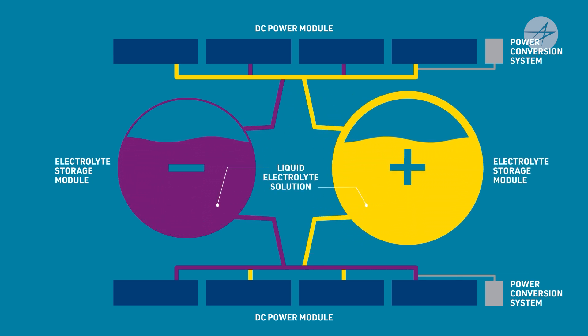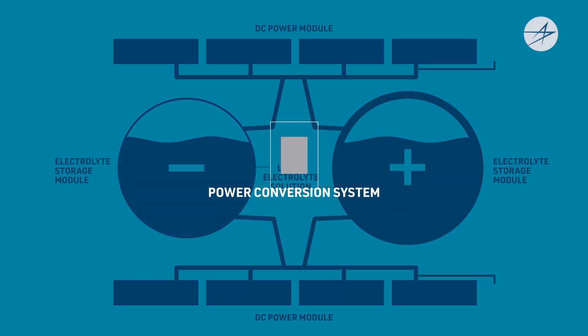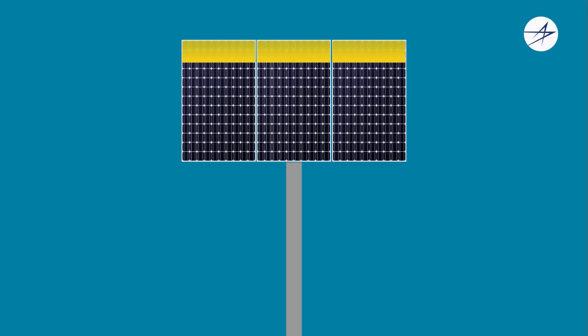So how does GridStar Flow work? It begins with the first component, the power conversion system. Electricity from the power source is transmitted to the power conversion system, where it is converted from three-phase AC electricity by an inverter to DC electricity.